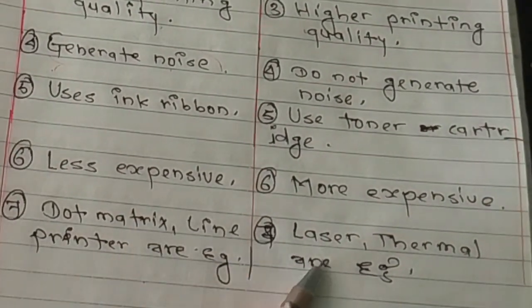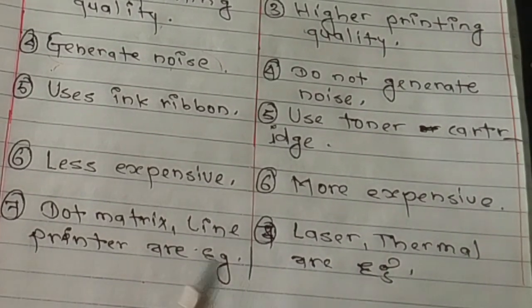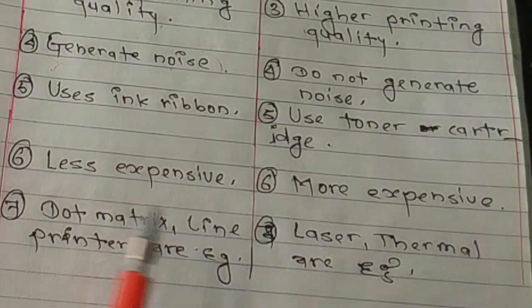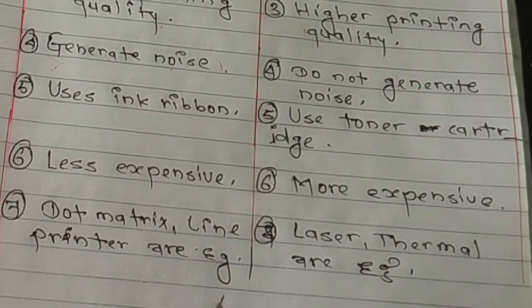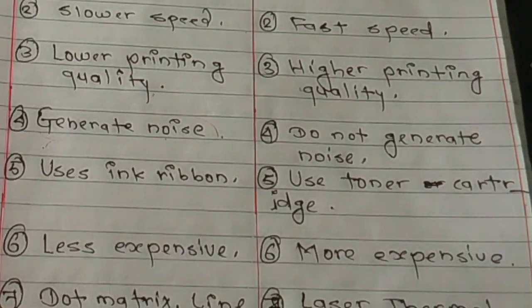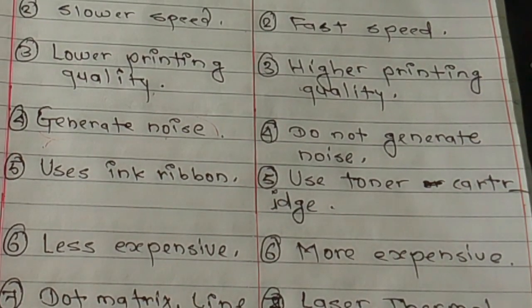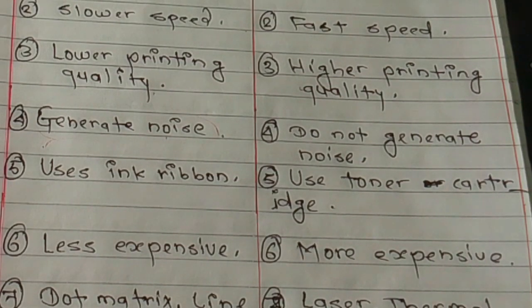Impact printers are less expensive. Examples of impact printers include the dot matrix printer and line printer. Examples of non-impact printers include laser and thermal printers. I hope this explanation of the difference is helpful. See you in the next video, thank you.